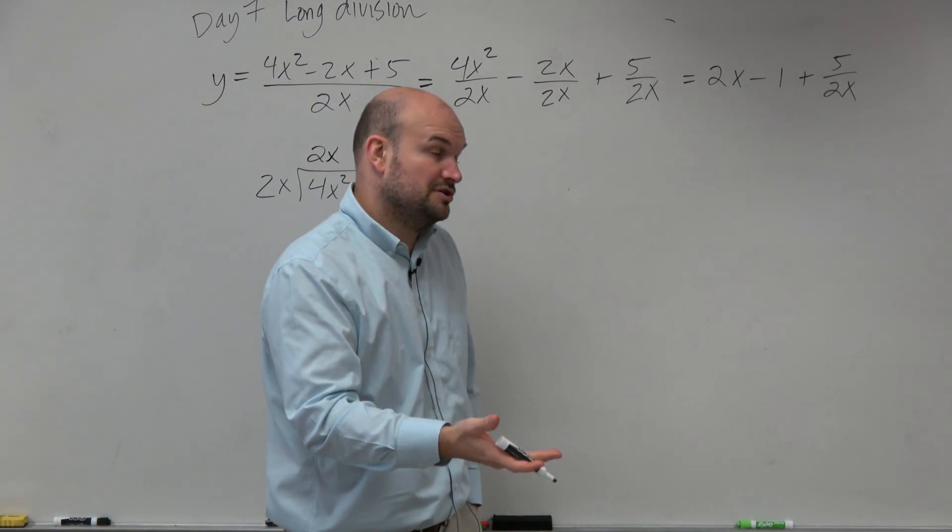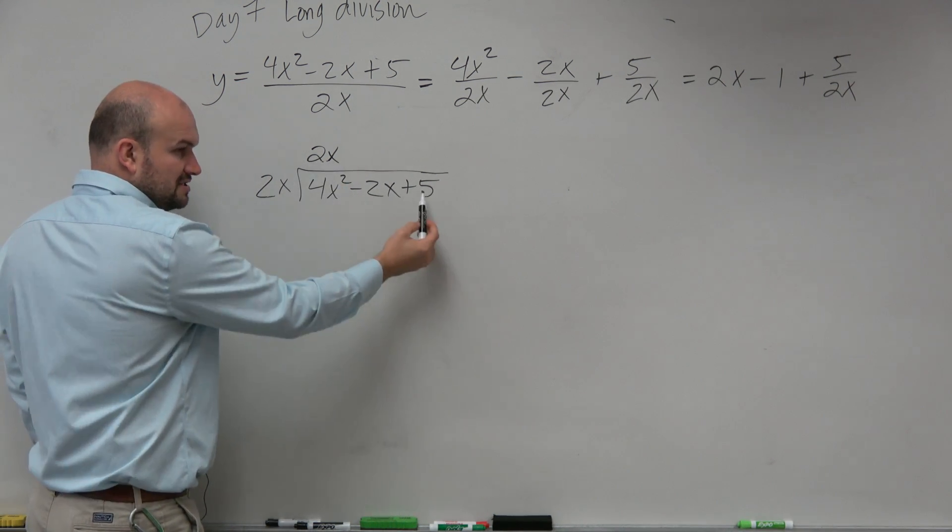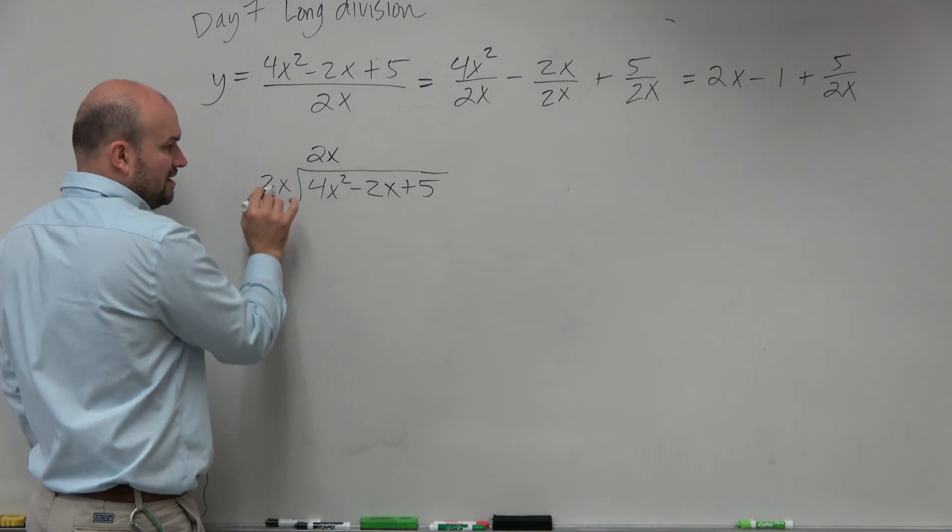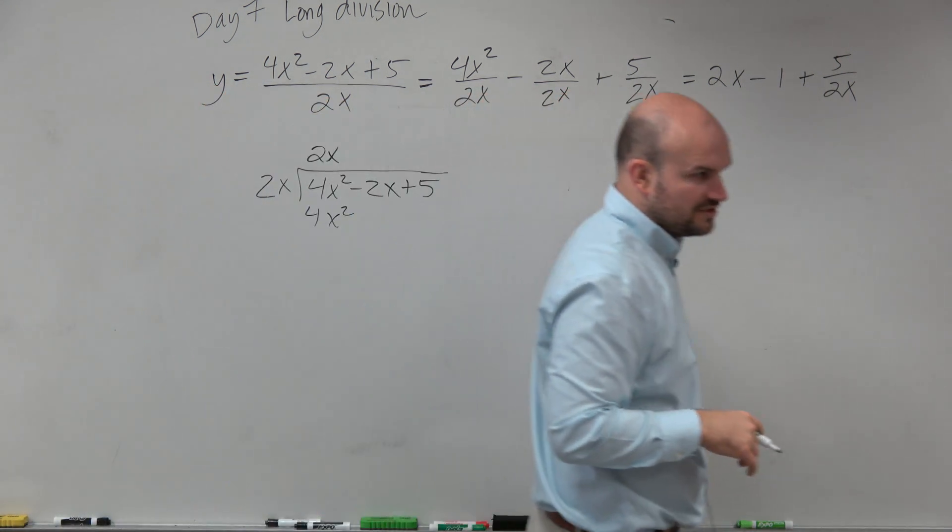Now, for the long division algorithm, what you need to do is take your quotient. This is the first part of the quotient. This is the divisor. This is the dividend. You're going to multiply it back and you're going to write it down below that first term.